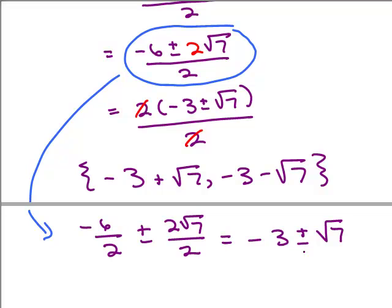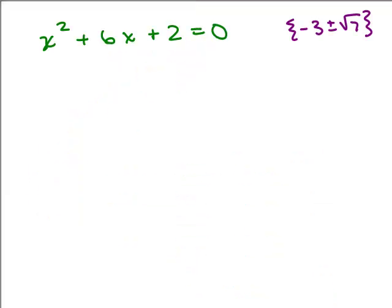Now I'm going to take that problem one more time and go ahead and do it by completing the square so you can see that that's actually an easier way, well it could be an easier way for some people. So here's the problem again and this was the solution: we got -3 + √7, -3 - √7. Let's just do this by completing the square just so you can see an alternate way to do this.